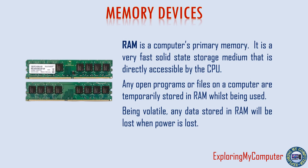Random Access Memory (RAM) is a computer's primary memory. It is a very fast solid-state storage medium that is directly accessible by the CPU. Any open programs or files on a computer are temporarily stored in RAM whilst being used. Being volatile, any data stored in RAM will be lost when power is lost.